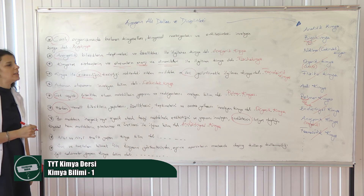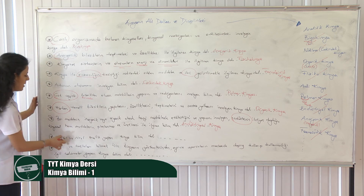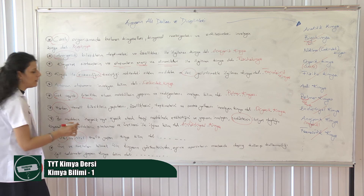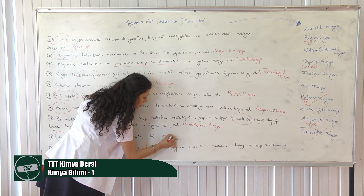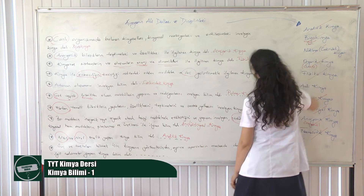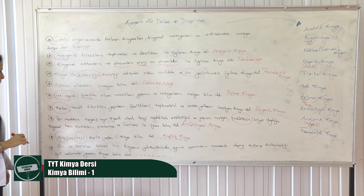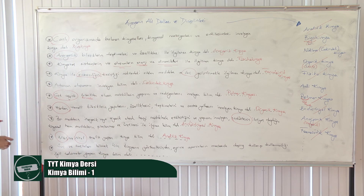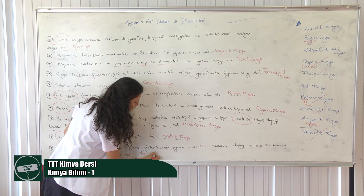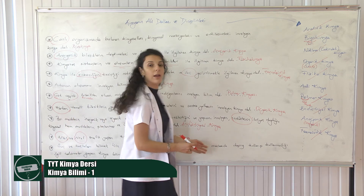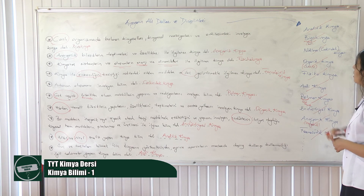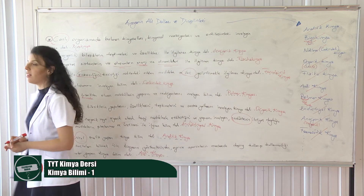Nitel ve nicel analiz yapan kimya bilim dalı — hem gözlenen hem ölçülebilen analizleri yapan bilim dalı analitik kimyadır. Bunlarla ilgili bir kere soru çözerseniz zaten oturur; kelime kopyalarından hepsini çıkarırsınız. Sıradaki: suç ve suçluları bulmak için kullanılan kimya dalı — adli kimyadır. Aynı zamanda sporcularda doping kullanıp kullanmadıklarını anlamak için kullanılan kimyanın alt bilim dalı da adli kimyadır. Bunlar da kimyanın alt bilim dallarıdır.